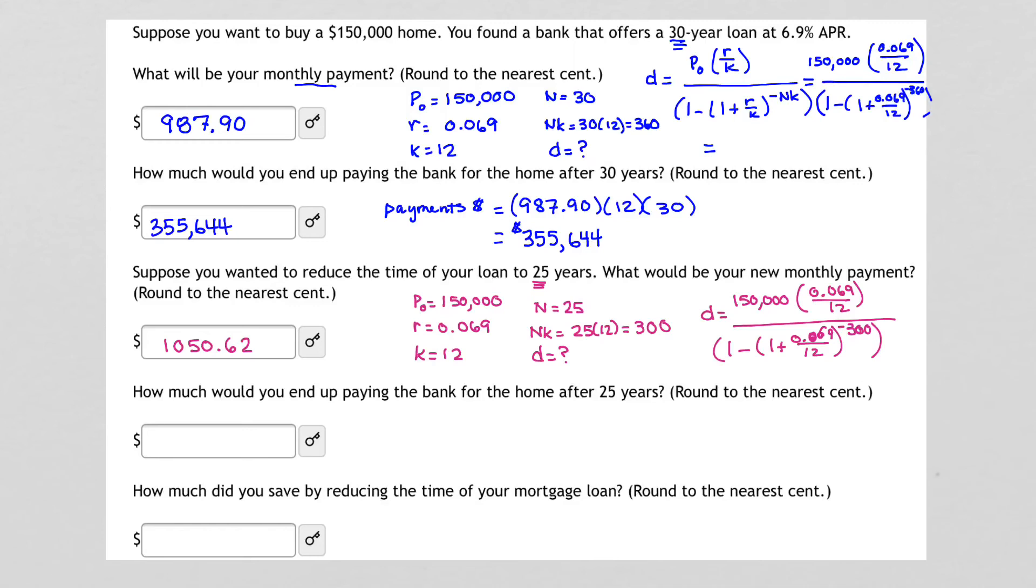Again, we repeat the process. How much would we end up paying the bank for the home after 25 years? Well, to get our total payments, what do we do? We take our monthly payment, which is $1,050.62. We multiply it by 12, and that tells us how much we're paying per year to the bank. And then we multiply that times 25. That gives us $315,186. And that's how much we would end up paying the bank for borrowing the money on our loan, $315,186.